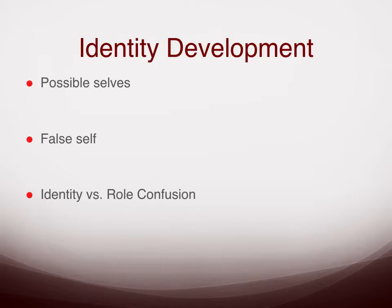In Erikson's theory, the stage during adolescence is identity versus role confusion. The challenge is to integrate different aspects of self-understanding into a coherent identity — your self-definition as a separate individual in terms of your roles, attitudes, beliefs, and aspirations. For Erikson, this is the most important task of adolescence and it sets the stage for later Erikson stages. However, Erikson's theory is quite rigid in that you either fall on the positive or negative side, so other researchers have developed different ways of thinking about identity status.